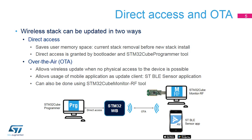The wireless stack can be updated in one of two ways, depending on the availability of a physical or wired link on the device. A direct access through a physical link using the bootloader allows you to perform the first install of the wireless stack. Afterwards, the stack can be updated by first removing the current stack, reducing the amount of memory needed for the operation. There is only enough space for one stack in the flash memory.